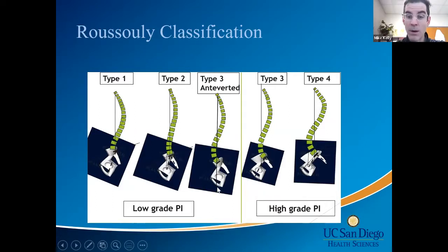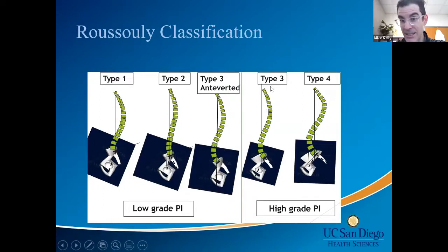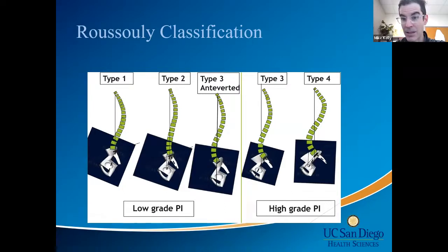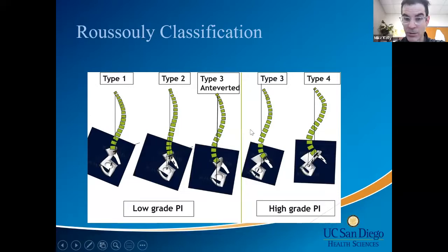Type 3 anteverted patients have essentially zero pelvic tilt with a pretty profound S-shape in the setting of low PI. As PI goes to 60 and higher — 60s to 75s, then over 75 — pelvic tilt increases and the hips move out front, but it's normal. The apex of lordosis moves up to the L3–L4 disc. You have an S-shaped thoracic spine with thoracic kyphosis in relation to lumbar lordosis, ultimately maintaining horizontal gaze.